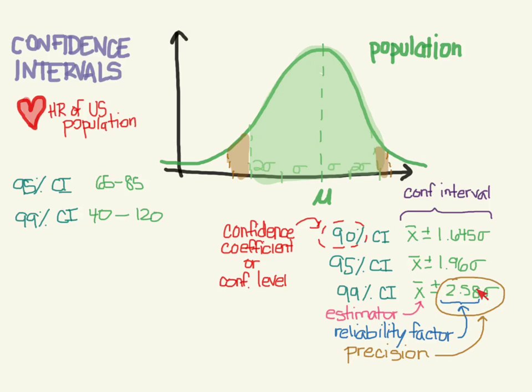This we get from whichever confidence coefficient we choose. So that, again, is also something we can't change. So can we change this? Well, what were we using as our estimate for this? If you remember, we were using the standard error.